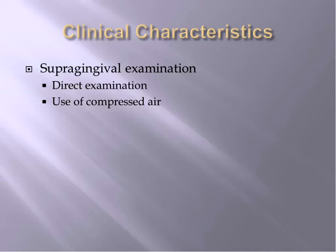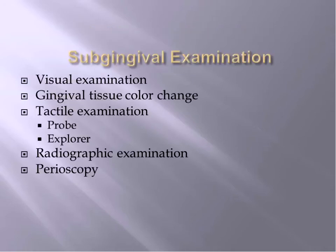Identification of calculus prior to removal depends on knowledge of its appearance, consistency, and distribution. For supragingival calculus examination, you have direct examination — you can see it above the gum line. You might need a mouth mirror. You can use compressed air, as small amounts of calculus may be invisible when wet, but can easily be seen when dried. Sometimes a dark edge of calculus can be seen just at or below the gingival margin, and blowing air gently can deflect the gingival margin to see into the pocket.